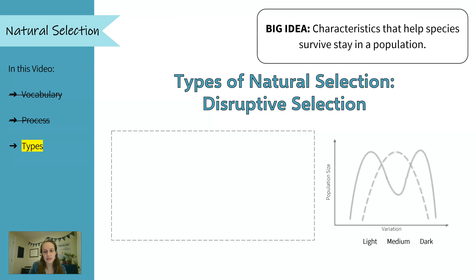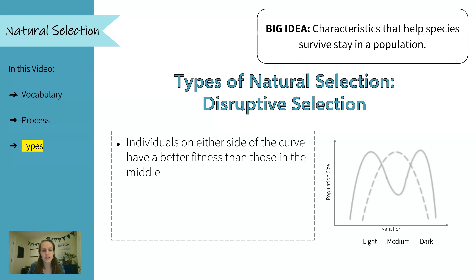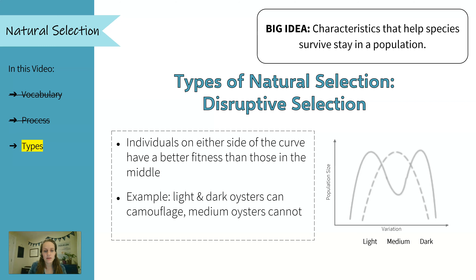And finally we have disruptive selection. This is when individuals on either side of the curve have better fitness than those in the middle. A good example of this is oysters. Light colored oysters — tan or almost white — can survive because they camouflage in the sand. And then dark colored oysters, really dark brown, dark gray, or black, survive because they can camouflage on the rocks. But medium colored oysters really show up on both the sand and on the rocks.